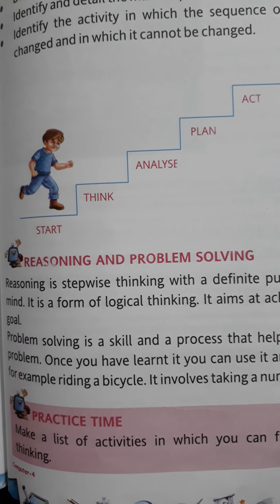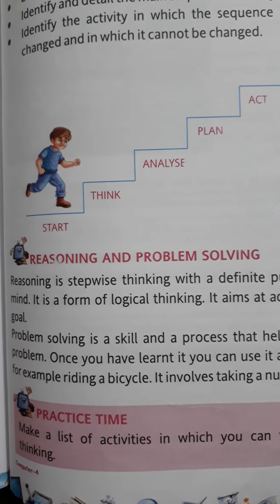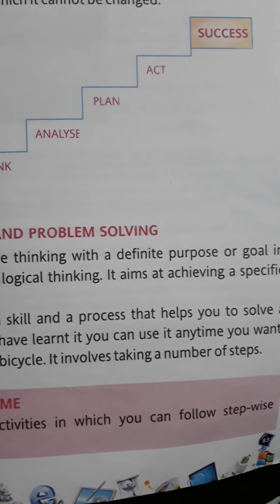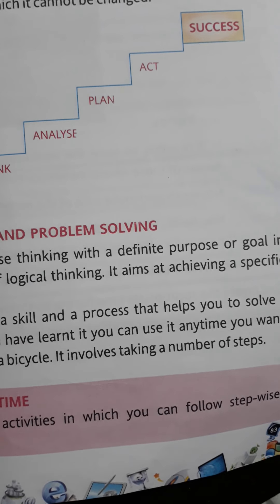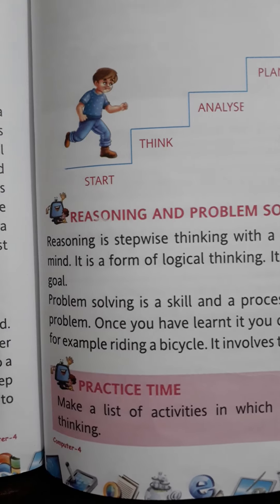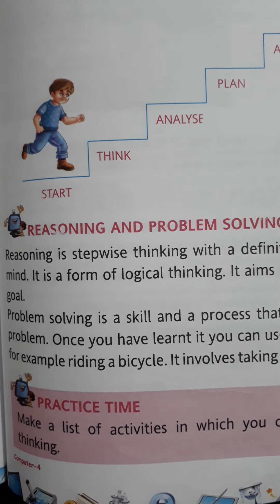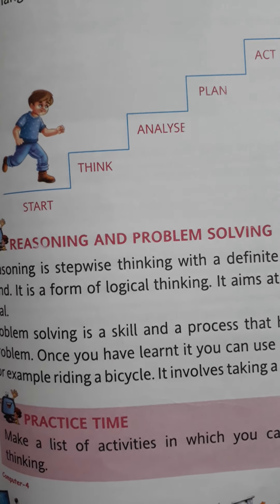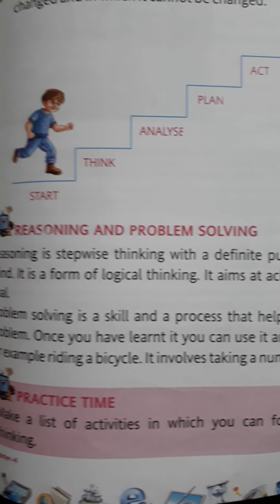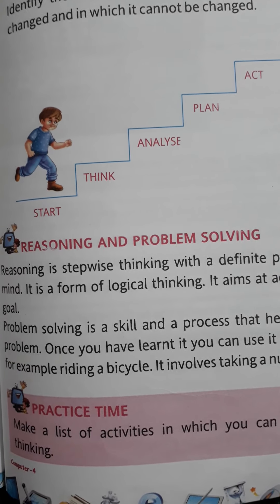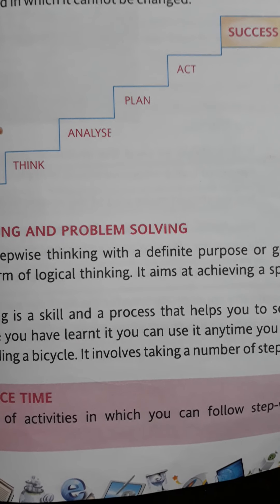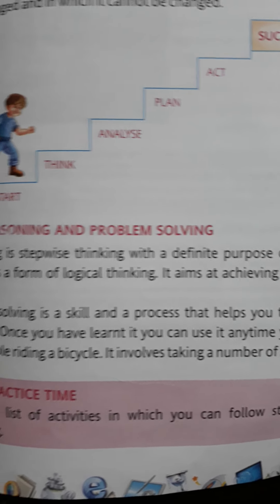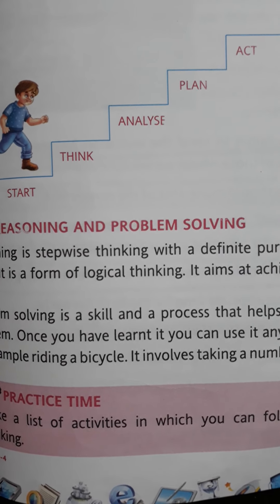Next: reasoning and problem solving. Reasoning is stepwise thinking with a definite purpose or goal in mind. It is a form of logical thinking that aims at achieving a specific goal. Problem solving is a skill and a process that helps you solve a problem. Once you have learned it, you can use it anytime — for example, riding a bicycle. It involves taking a number of steps, and if you face a problem, problem-solving skills will help you get over it.